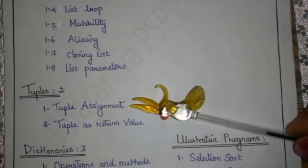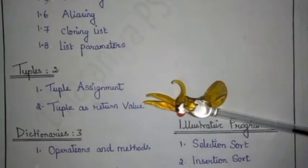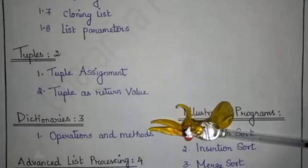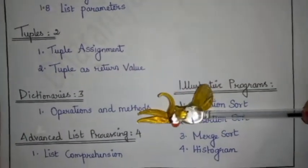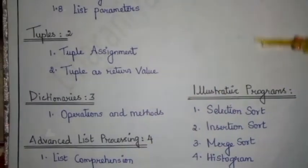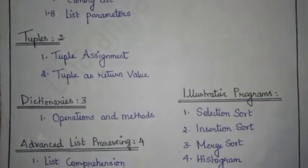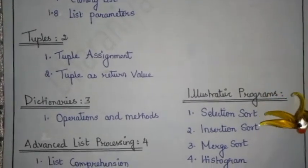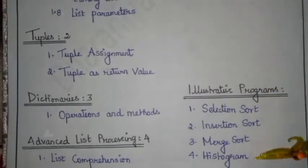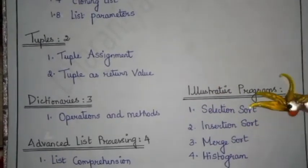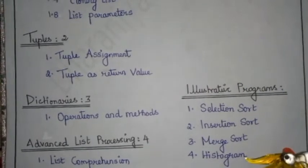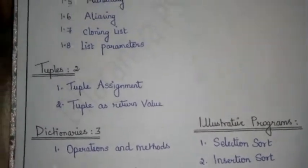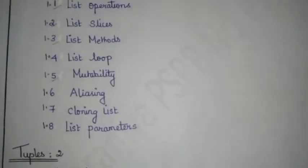For tuples you have tuple assignment and tuple as return value. For dictionary you have operations and methods. For advanced list processing we have list comprehension. And you have illustrative programs which are selection sort, insertion sort, merge sort, and a histogram. All these topics will be covered in this series of videos.